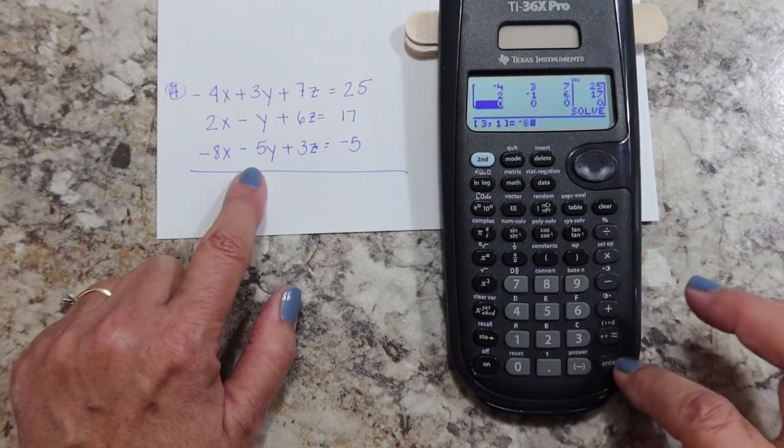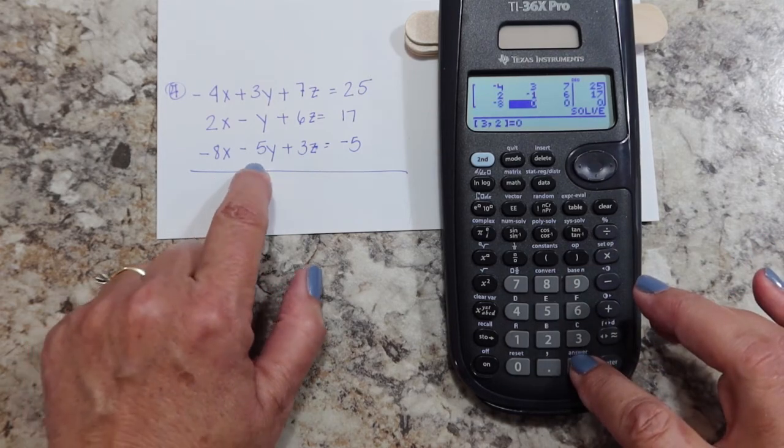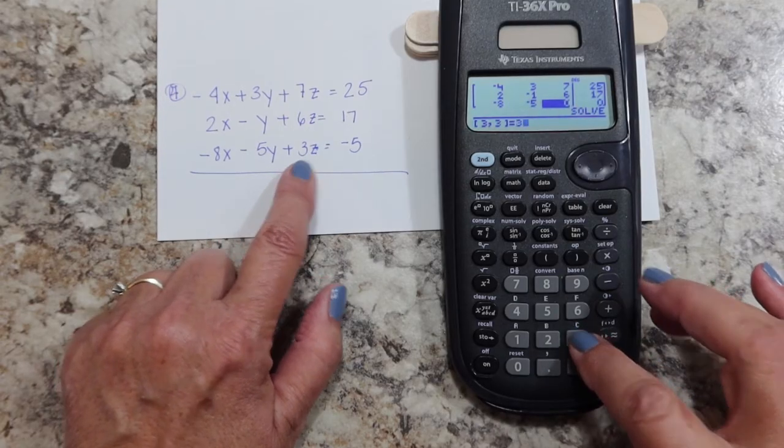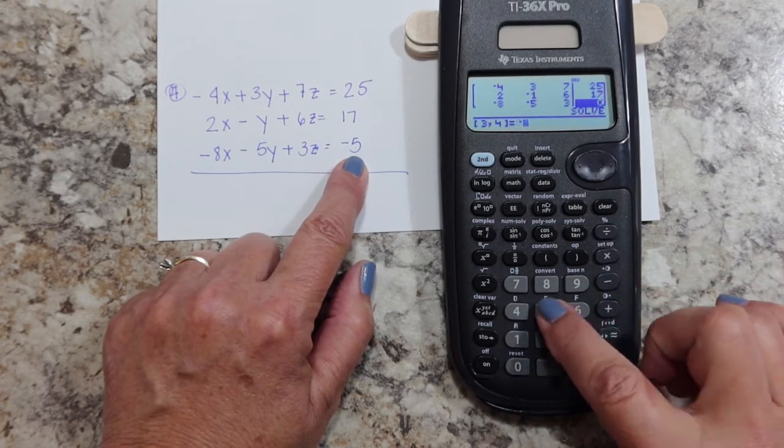My bottom one, I've got negative eight. I'm going to enter negative five because of that minus sign. Then three, and then negative five.